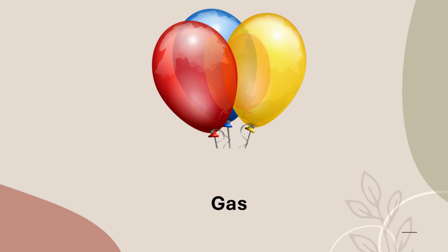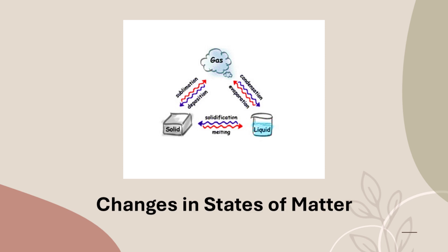Gases have to be kept in closed containers. Most gases cannot be seen — you breathe in oxygen every day but you cannot see it. Similarly, you cannot see most gases. Examples of gases are oxygen, nitrogen, carbon dioxide, etc.